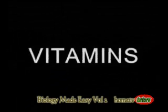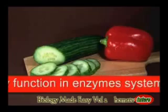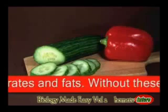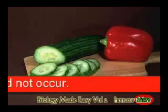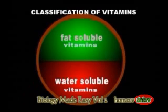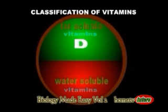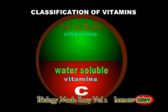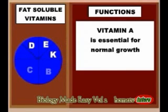Vitamins: vitamins are organic compounds that mainly function in enzyme systems to enhance the metabolism of proteins, carbohydrates, and fats. Without these substances, the breakdown and assimilation of foods could not occur. Vitamins are classified into two groups: the fat-soluble and the water-soluble vitamins. Fat-soluble vitamins include vitamins A, D, E, and K. The water-soluble vitamins include vitamin C and the B vitamin complex.